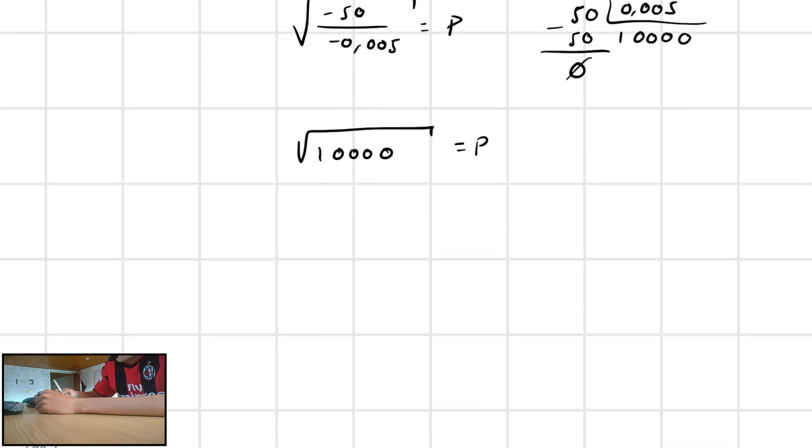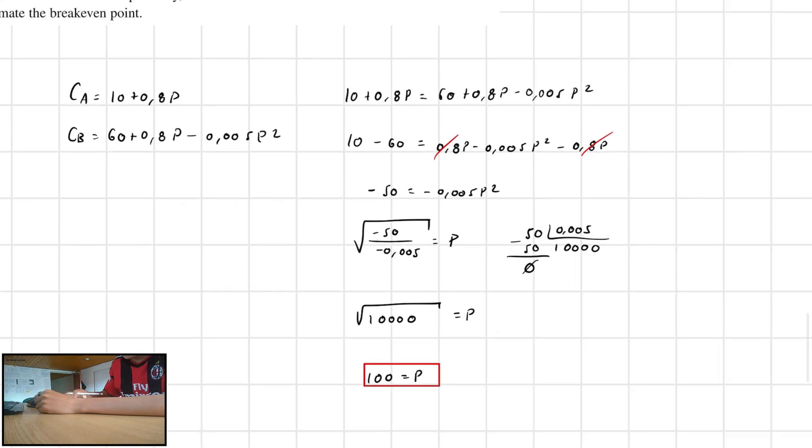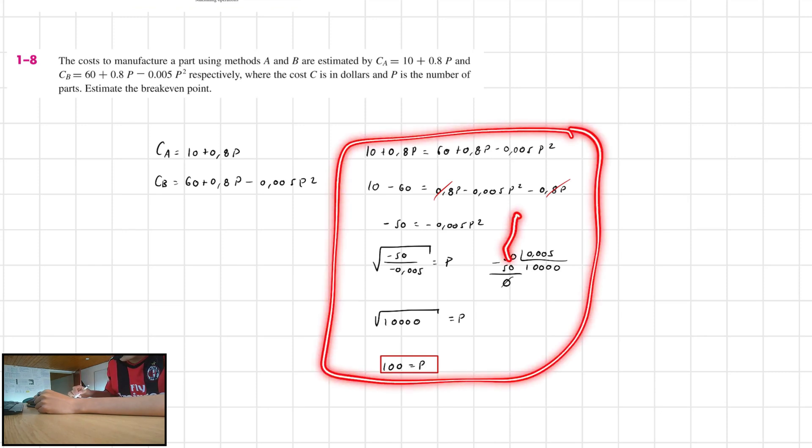And all I have to do is to eliminate two zeros, because right here I have 2. So, P is equal to 100. And right here we have our final answer. This is the number of parts in which both of the cases will cost the same. One hundred parts, sorry.